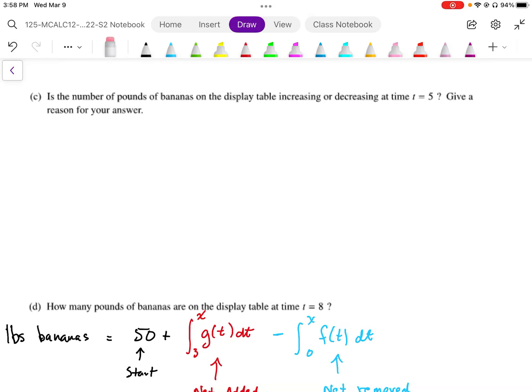Part C asks, is the number of pounds of banana on the display table increasing or decreasing at t equals 5? We're trying to find out if the rate is either positive or negative, and the rate is going to be comparing the rate values of f of t and g of t.